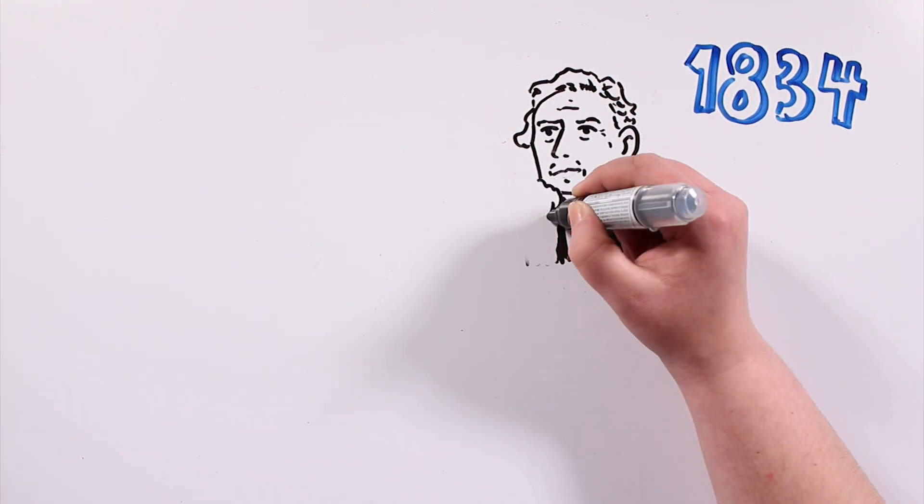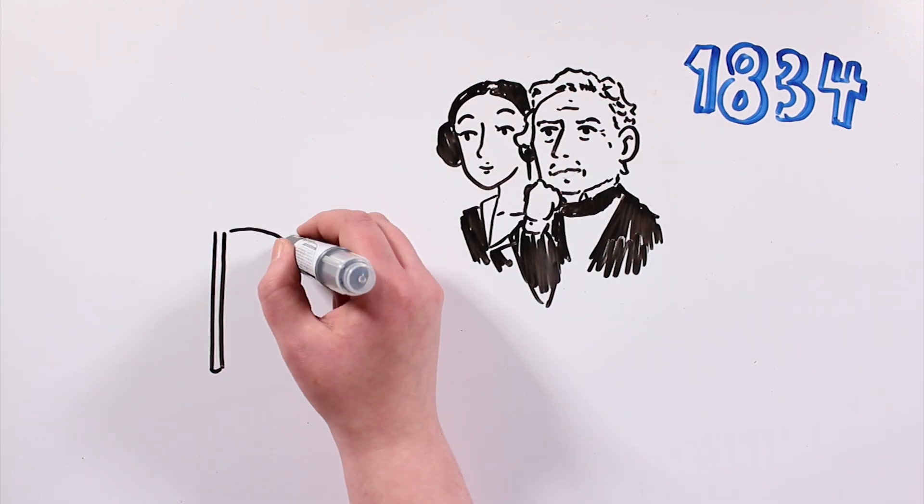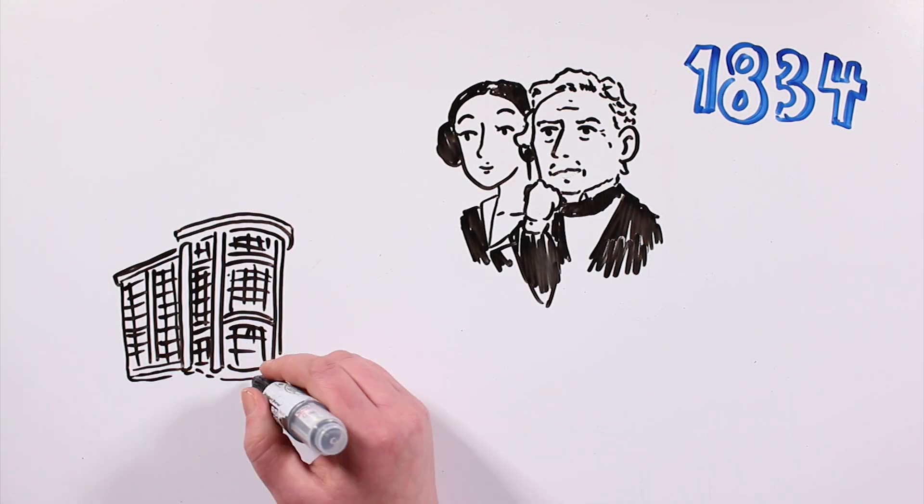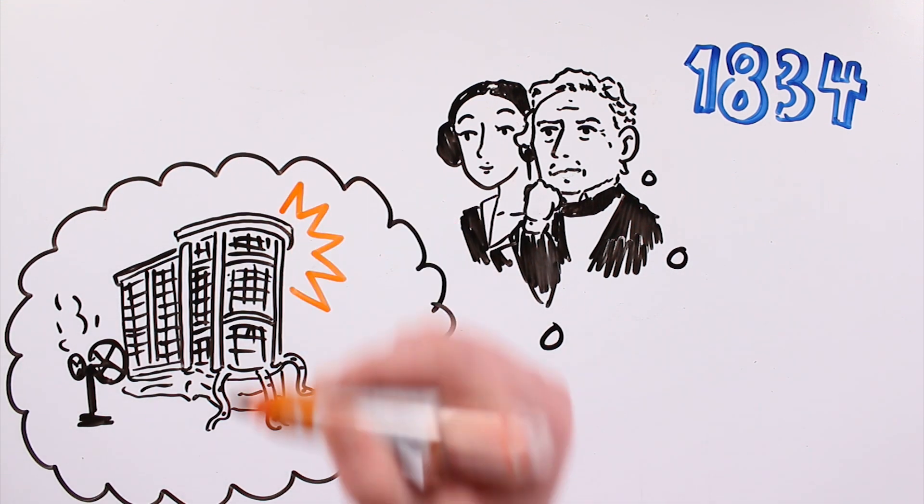In 1834, Babbage had plans for the construction of a new model of calculating machine – a general, analytical machine that would become the antecedent of the modern computer.